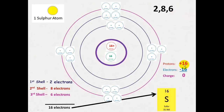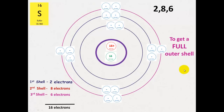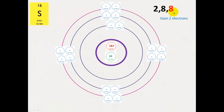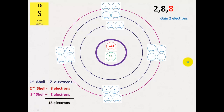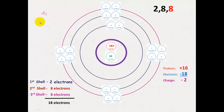Sulfur has 16 protons and 16 electrons, so it has an overall charge of zero. However, to get a full outer shell, it wants to gain two electrons. It gains those two electrons to get eight in its outer shell, giving a total of 18 electrons. This gives the sulfide ion a charge of negative two, because it has an extra two electrons. So the sulfur atom becomes the sulfide ion, S²⁻, and that two-negative represents those extra two electrons.